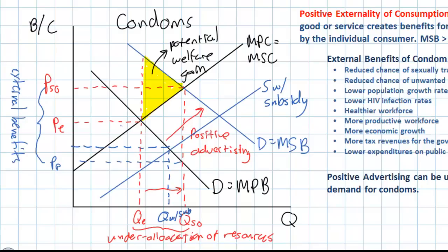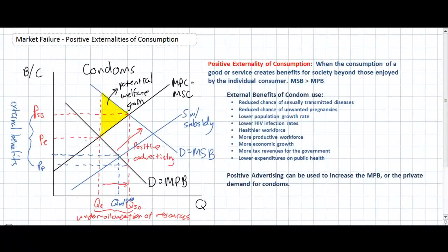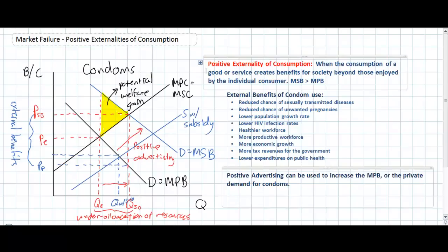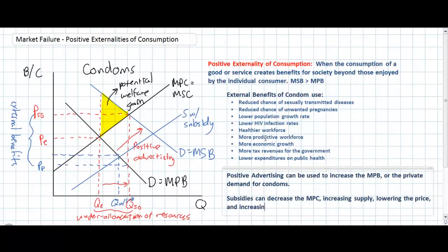The decrease in price will incentivize more users to choose condoms rather than not using them. So we have seen two possible solutions to a positive externality of consumption. Positive advertising can be used to increase the demand and the marginal private benefit to condom users, and subsidies can decrease the marginal private cost, increasing supply, lowering the price, and increasing the quantity demanded to the socially optimal level. A positive externality of consumption arises whenever there are spillover benefits or external benefits associated with the consumption of a particular good. Condoms are a great example because there are many benefits enjoyed by society as a whole that exceed the benefits enjoyed by the users themselves. Positive advertising and subsidies can help eliminate or reduce this market failure.